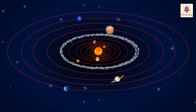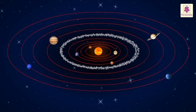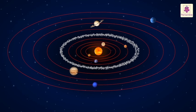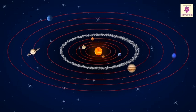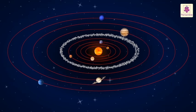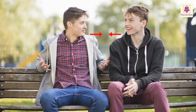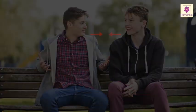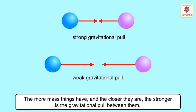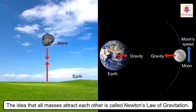Each planet revolves so quickly around the sun that the sun's gravity cannot pull the planet towards itself. Yet the planets do not revolve so fast that they can break away from the sun's pull and hurtle off into space. Gravity is the force of attraction between all masses. There is gravitational attraction even between two persons sitting next to each other, but that force is far too small to have an impact. The more mass things have and the closer they are, the stronger is the gravitational pull between them. The idea that all masses attract each other is called Newton's law of gravitation.